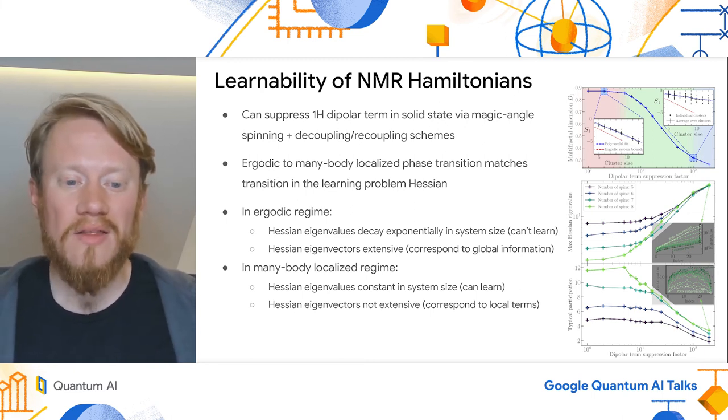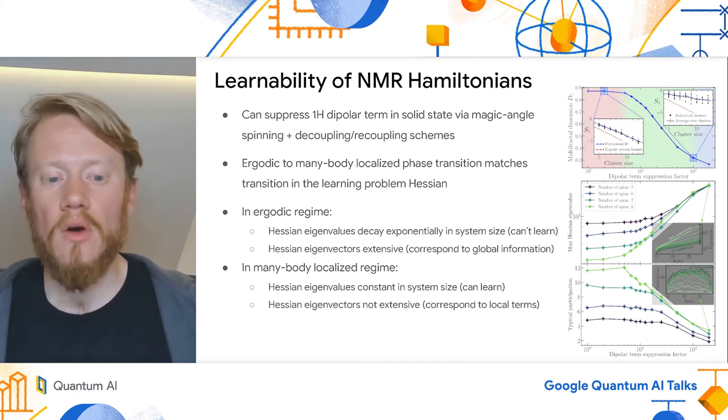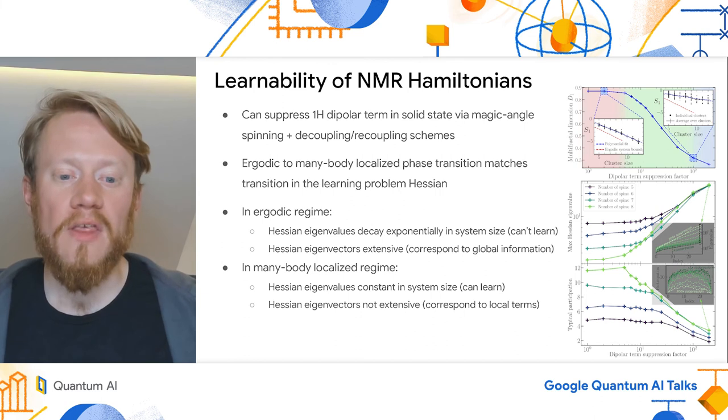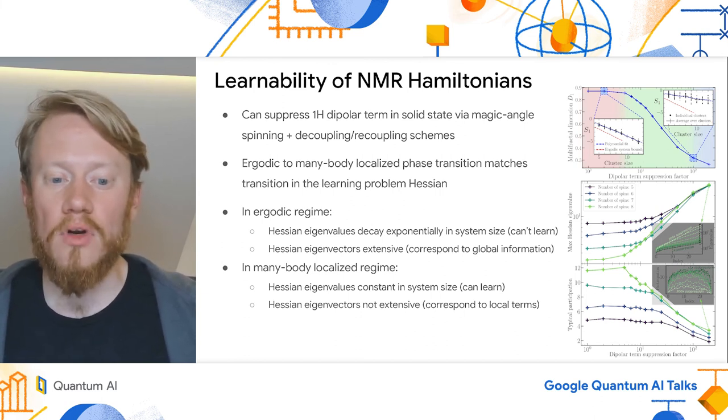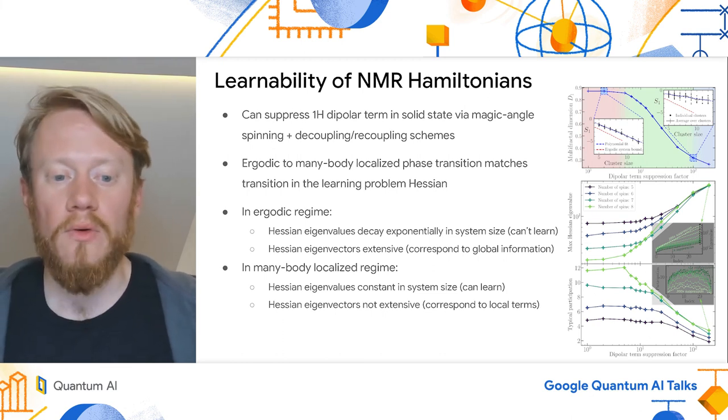While in the fractal regime, the rates are constant in the system size. This means that as we scale to a large system, we will not be able to learn anything in an ergodic system using our given choice of experiments, while in the localized system, we will be able to.